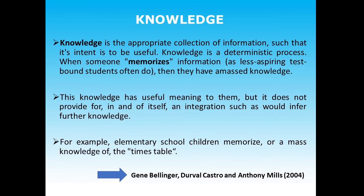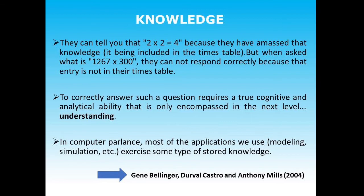For example, elementary school children memorize the multiplication timetable — they have just memorized and amassed that information and can replicate it without looking at it. They can tell you that 2×2 is 4 because it is in the timetable. But when asked what 1,267 × 300 is, they cannot respond quickly because that entry is not in the timetable. To correctly answer such a question requires true cognitive and analytical ability, which is encompassed in the next level — understanding. Knowledge is about processing, memorizing, and amassing information that is already available.